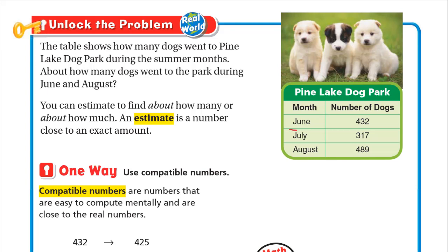About how many dogs went to the park during June and August? You can estimate to find about how many or about how much. An estimate is a number close to an exact amount, not exactly the same amount but a number close to this amount or a number easier to remember or easier to deal with.